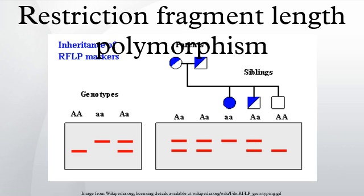The basic technique for detecting RFLPs involves fragmenting a sample of DNA by a restriction enzyme, which can recognize and cut DNA wherever a specific short sequence occurs, in a process known as a restriction digest. The resulting DNA fragments are then separated by length through a process known as agarose-gel electrophoresis, and transferred to a membrane via the Southern Blot procedure.